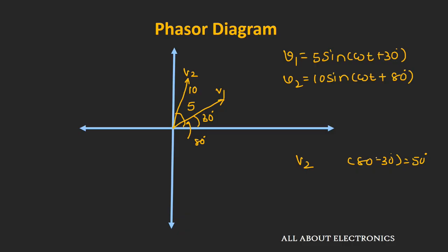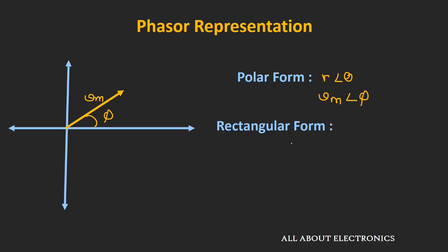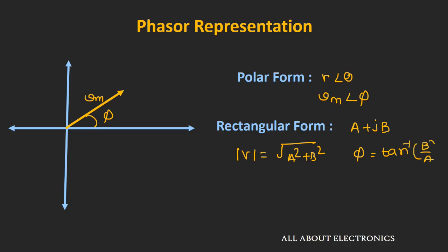So far we have seen how to represent a Phasor on a Phasor diagram. Now let us see how we can represent a Phasor in mathematical form. The first form is the polar form, where we represent the Phasor in terms of R and θ — for a Phasor with amplitude Vm and angle φ, we write it as Vm∠φ. The next form is the rectangular form, where we represent any Phasor as a complex number A + jB; the amplitude is √(A² + B²) and the phase is tan⁻¹(B/A). The third form is the exponential form, where we represent the Phasor as Vm·e^(jφ). These are the three basic representations of a Phasor.